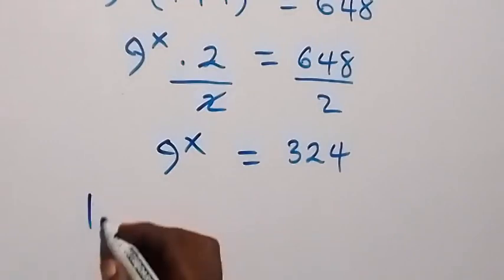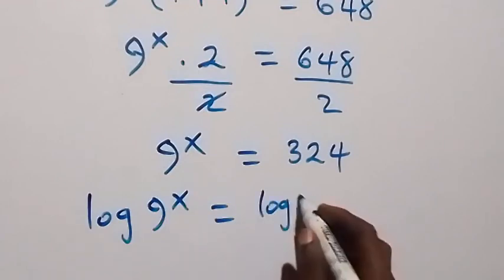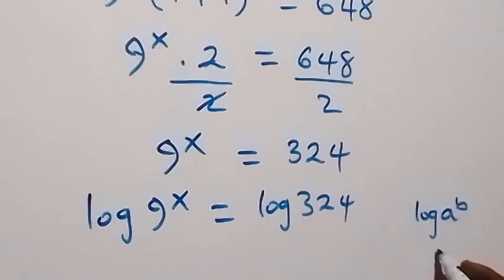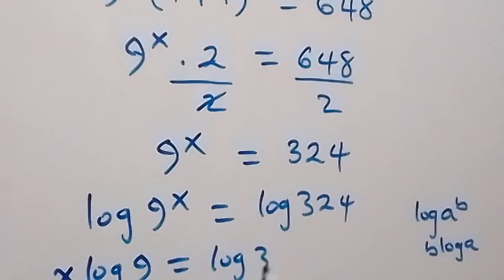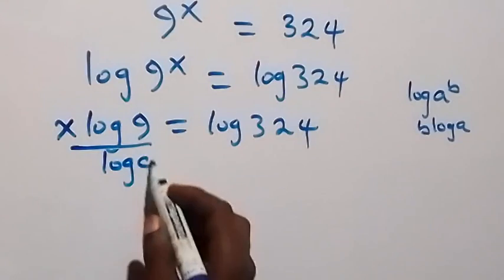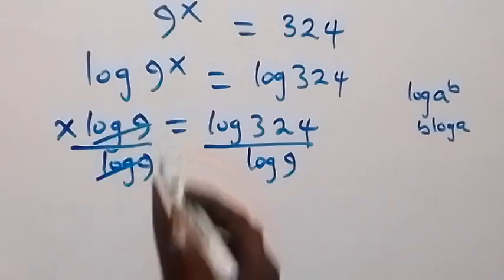9 raised to power x equals 324 on this side. From here we take the log on both sides: log of 9 raised to power x equals log 324. Applying the power rule — log(a^b) = b·log(a) — this becomes x·log 9 equals log 324. Then we divide both sides by log 9, and log 9 cancels.